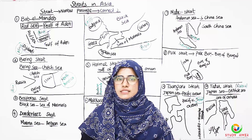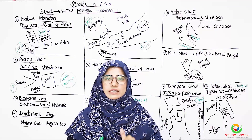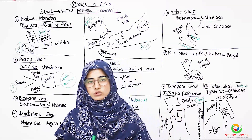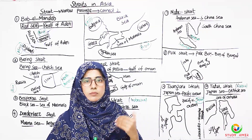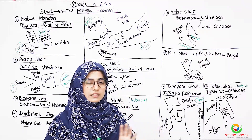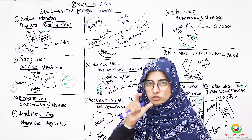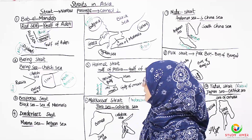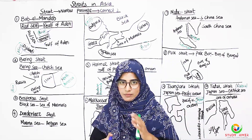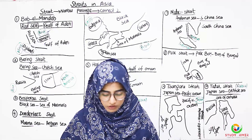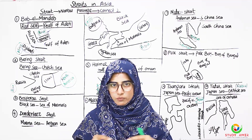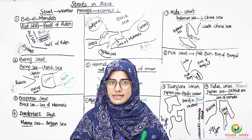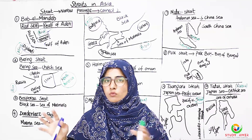This is a different continent, but today we have to discuss only Asia's straits. There are quite a lot of straits in different places that we have to discuss from the exam point of view. I have made pictures so that they can be memorized. First of all, I will tell you what a strait is. A strait is a narrow strip of water that connects two large water bodies.